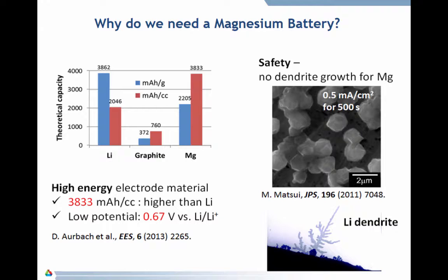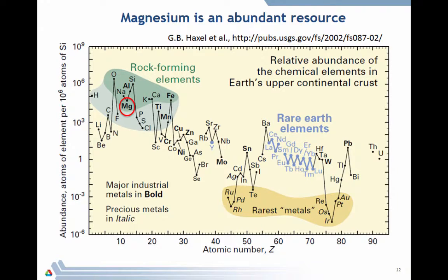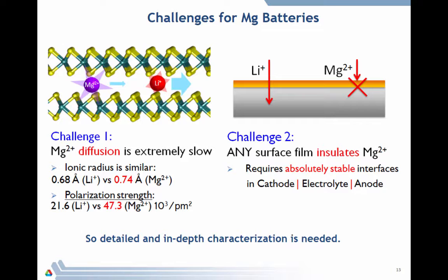So lithium batteries have formed these dendrites which short batteries. You might hear recently a lot about the Samsung batteries exploding. I'm not 100% certain, but I would not be surprised if that has something to do with dendrite growth. They're a high energy electrode material, so they're promising in this regard. There's another good reason for it, which is magnesium is very abundant, much more than lithium. It's also a much more standard major industrial metal. It's used in other regards. So it's much more abundant. It's easier industrially. There are some downsides of magnesium, which is the diffusion of magnesium is not nearly as good as with lithium. You can see ionic radius is similar, but the polarization strength is much worse. And any surface film insulates the magnesium.